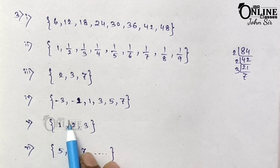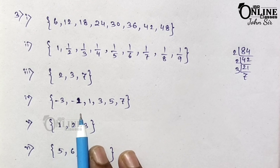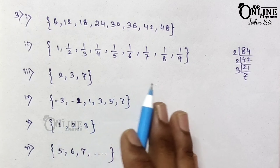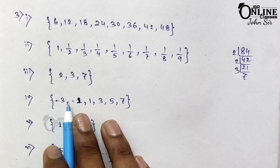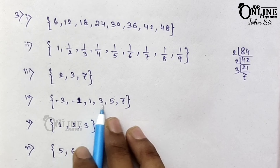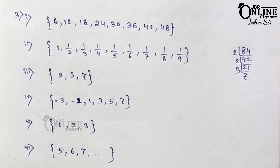Number 4: the set of odd integers lying between minus 4 and 8. Remember, only the odd numbers. Between minus 4 and 8: minus 3 is odd, minus 2 is even, minus 1, then 1, 3, 5, and 7. Only write down the odd numbers.